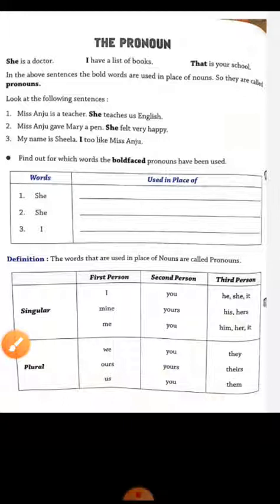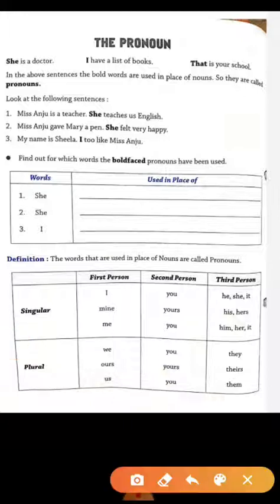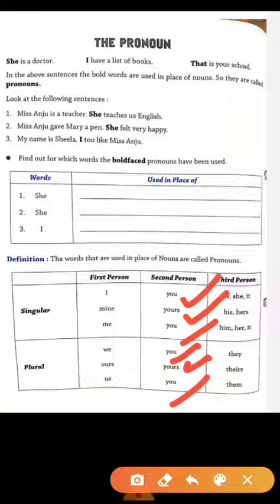We use plural forms. For the second person, we use you, yours, you. And in the plural forms as well, we use you, yours, you. This is similar for both singular and plural second person.